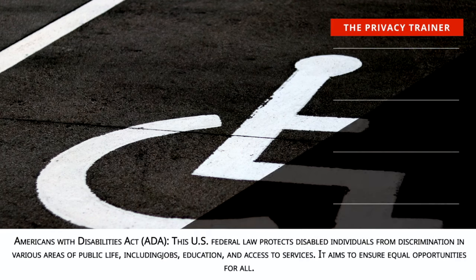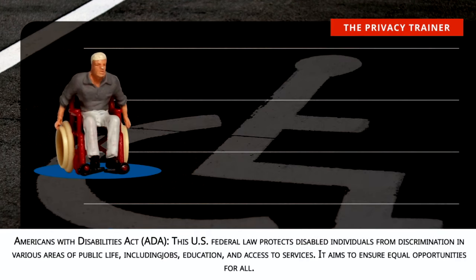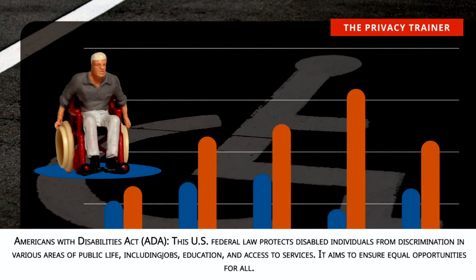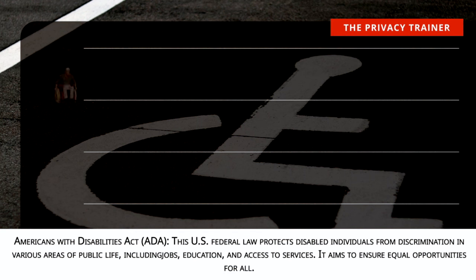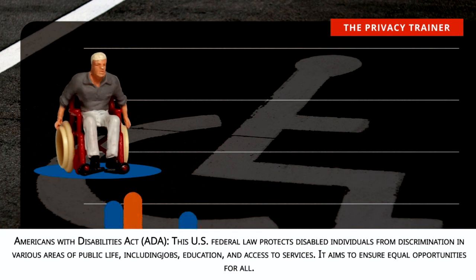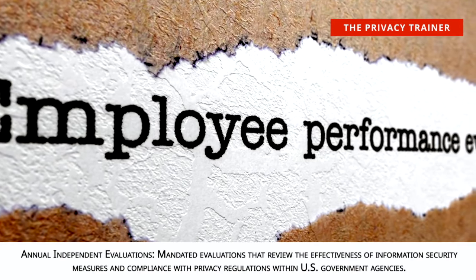Americans with Disabilities Act, ADA. This U.S. federal law protects disabled individuals from discrimination in various areas of public life, including jobs, education, and access to services. It aims to ensure equal opportunities for all. Annual independent evaluations. Mandated evaluations that review the effectiveness of information security measures and compliance with privacy regulations within U.S. government agencies.